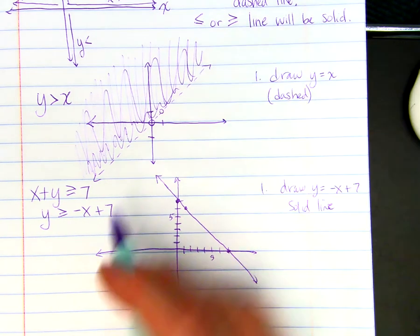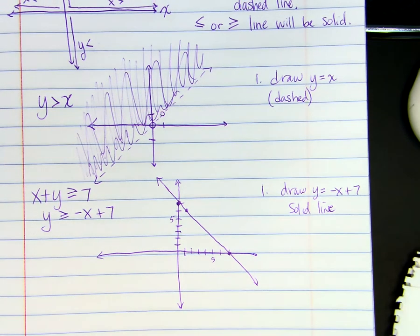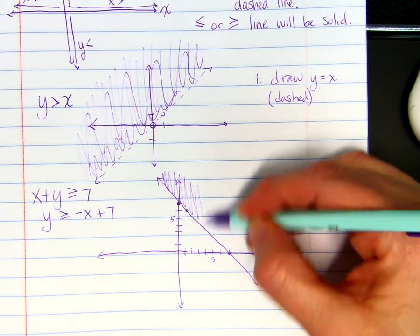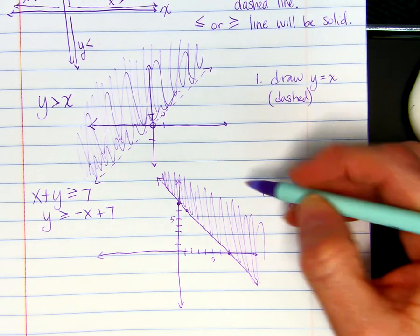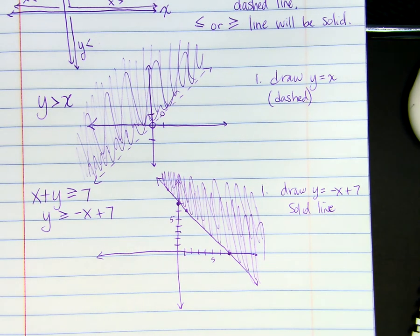And it says here that Y is greater than or equal to. From my diagram, whenever Y is greater than, I'm going to shade up above the line. And so above goes here. And then you can test a point just to make sure. And that's the end of that lesson.